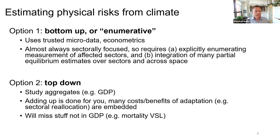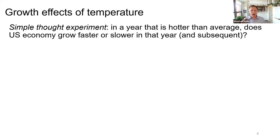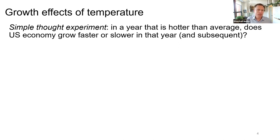The econometrics boil down to this thought experiment: in a year that is hotter than average, does an economy grow faster or slower in that year and in subsequent years? Interannual variation in temperature tends to be somewhat random — there's a long-term trend but about that trend there's randomness, and we can use that randomness to think about impacts on economic aggregates in a way that reflects causal inference.